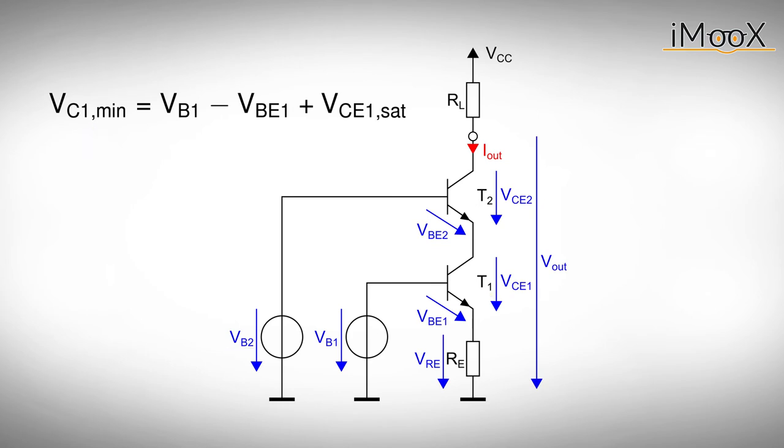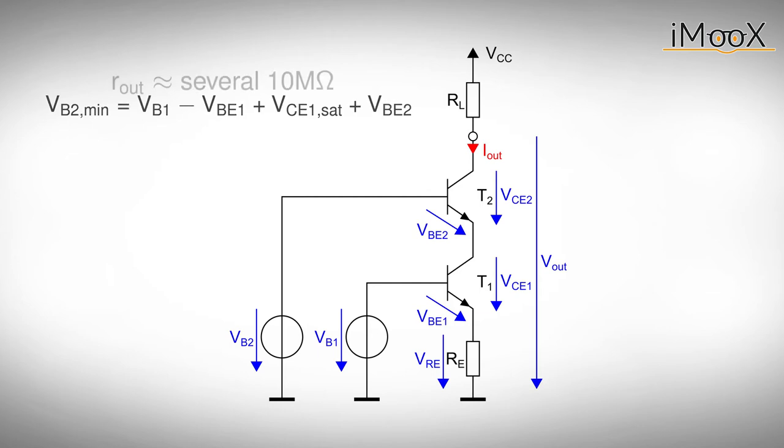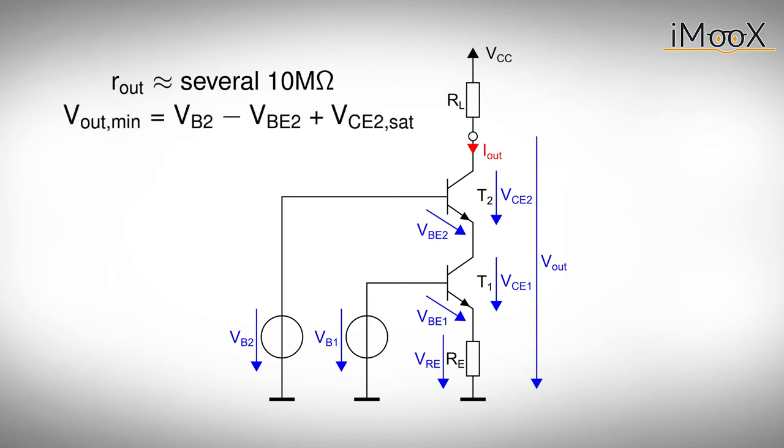We already calculated the lower boundary for the voltage at the collector of T1. We add the base emitter voltage of T2 and get the minimum second base voltage VB2. By adding transistor T2, we decrease the change of output current as a result of varying output voltage. But we have to trade the minimum output voltage of our circuit for a more stable output current, as also T2 must operate in the active regime. This circuit is known as a cascode current source.